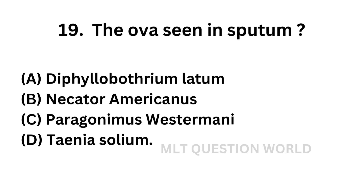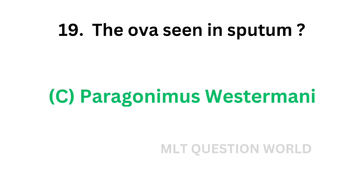Question number nineteen: The ova seen in sputum — Option A: Diphyllobothrium latum, Option B: Necator americanus, Option C: Paragonimus westermani, Option D: Taenia solium. The correct answer is Option C — Paragonimus westermani. Ova of Paragonimus westermani can be seen in sputum.